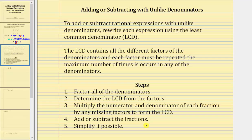Here are the steps we will follow. Number one, factor all the denominators. Two, determine the LCD from the factors. Three, multiply the numerator and denominator of each fraction by any missing factors to form the LCD. Four, add or subtract the fractions. And then five, simplify if possible. Let's take a look at some examples.